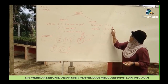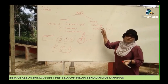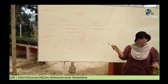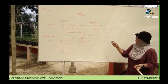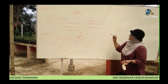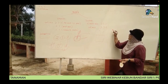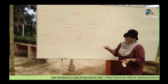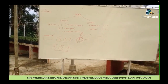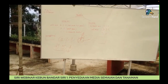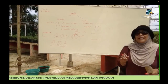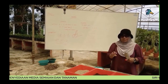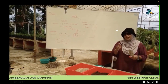Kenapa kita memberikan ratio 2:1:1 ataupun 3:2:1? Itu daripada UC Davis punya soil mixture ataupun soil mixture yang biasa kita gunakan, iaitu 3:2:1. Sebab apa? Sebab setiap medium-medium yang kita gunakan ni ada ciri-ciri kimia dan fizikal masing-masing yang kita kena pertimbangkan.